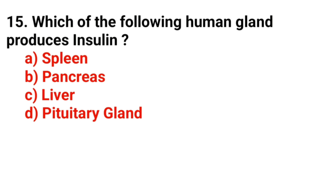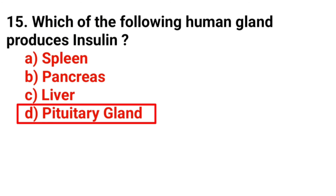Question 15: Which human gland produces insulin? Answer option D: pituitary gland.